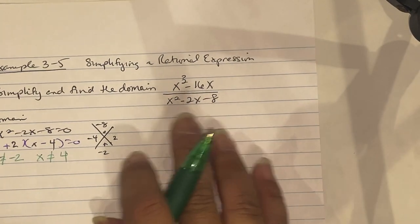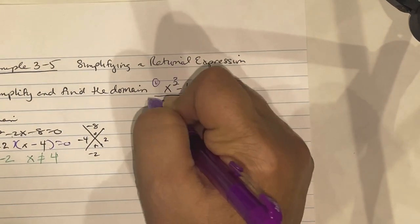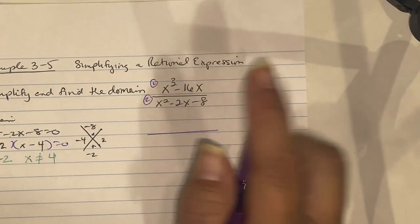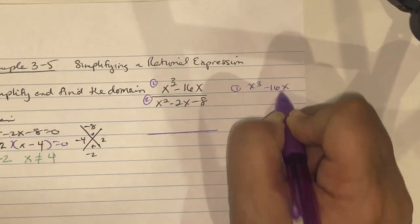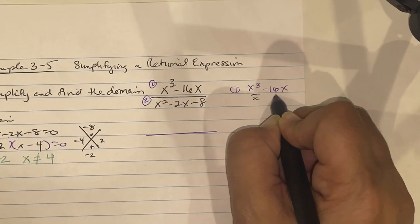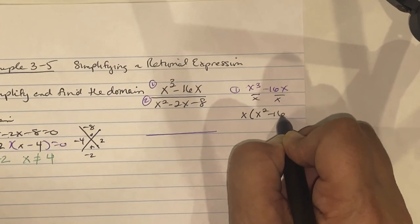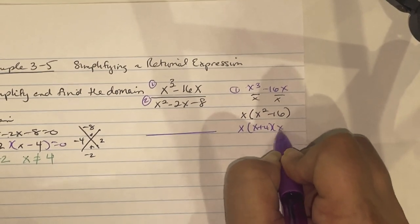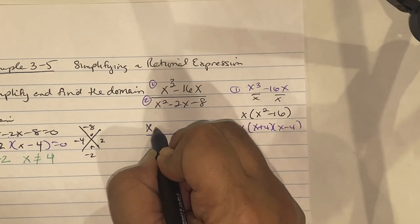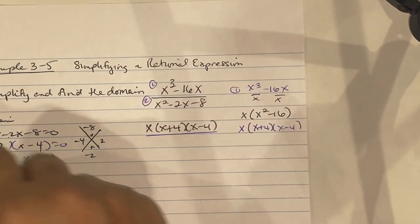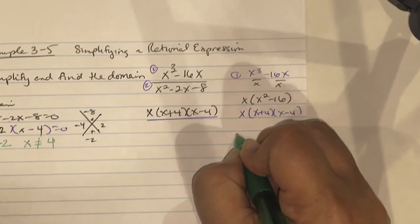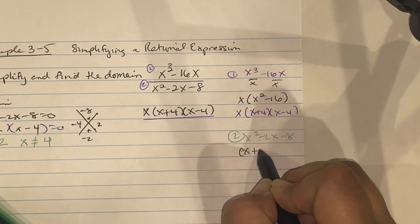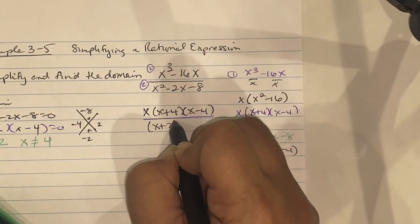Now we simplify. For the numerator, x cubed minus 16x: factor out x to get x times x squared minus 16, which is a difference of squares giving x times x plus 4 times x minus 4. For the denominator, we already factored it as x plus 2 times x minus 4.